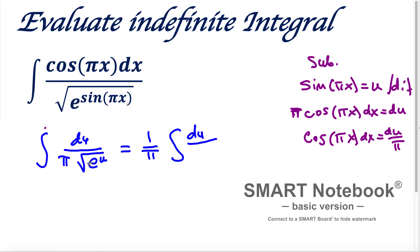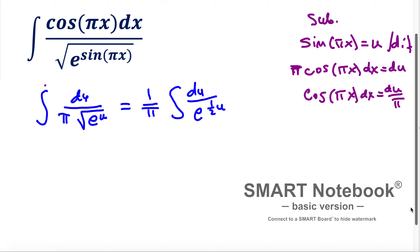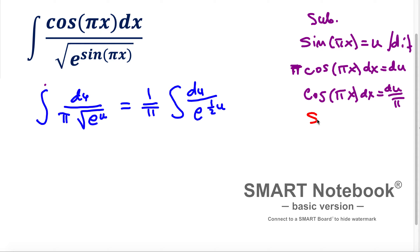Instead of the radical, we write it in exponential form: e to the exponent one-half times u. Now we can make another substitution. Let v equal one-half times u, and we substitute v for that exponent.